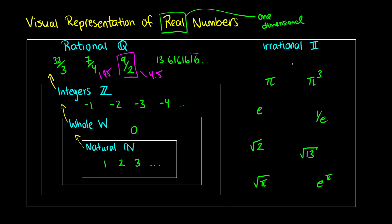Irrational numbers — something like pi, where we have 3.141592, there's no way to predict that the next number should be 6. It's not obvious; there's no set pattern. The number e is another irrational number. Many square roots of prime numbers are also irrational — the square root of 2 is irrational, the square root of 13 is irrational. If we take an irrational number like pi or e and raise it to a power or take a square root, it will also be irrational.